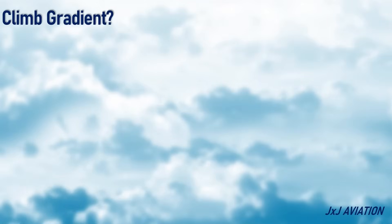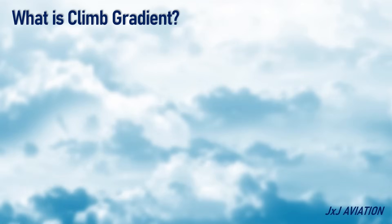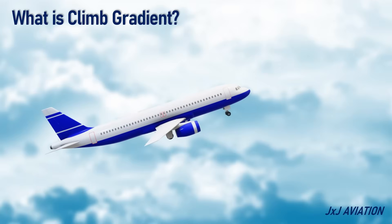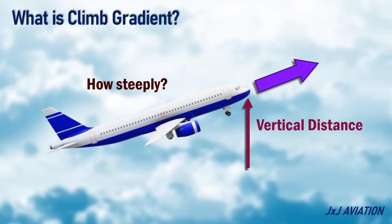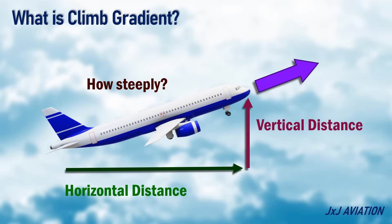First, let's look at what is climb gradient. The climb gradient is used to define how steeply an aircraft is ascending. It indicates the vertical distance an aircraft can climb relative to the horizontal distance traveled. The climb gradient can be expressed as a percentage or ratio.